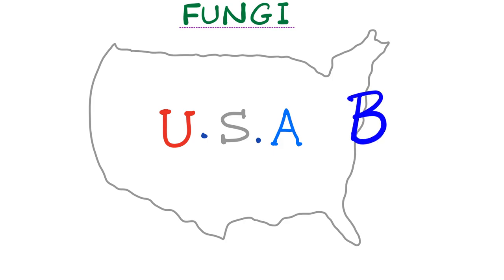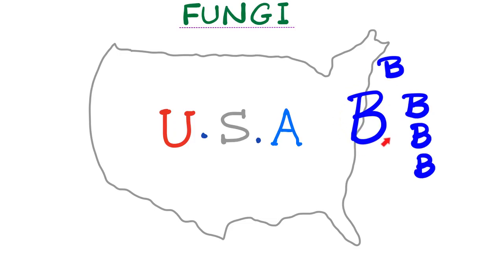The next fungus is blastomycosis. It is found on the East Coast, Central United States, and the Great Lakes — imagine a blast in Chicago. There is a geographic overlap between blastomycosis and histoplasmosis. Blastomycosis is characterized by broad-based budding yeast. It can lead to lung disease and can disseminate to skin and bone. It can cause verrucous skin lesions that might resemble squamous cell carcinoma. It can also cause granulomatous nodules. Blastomycosis is associated with fishing, hunting, gardening, and exposure to beaver dams — beavers act as reservoirs for this fungus.